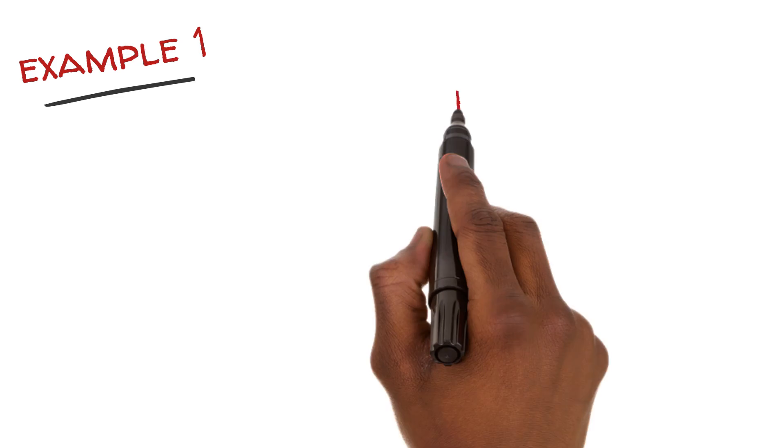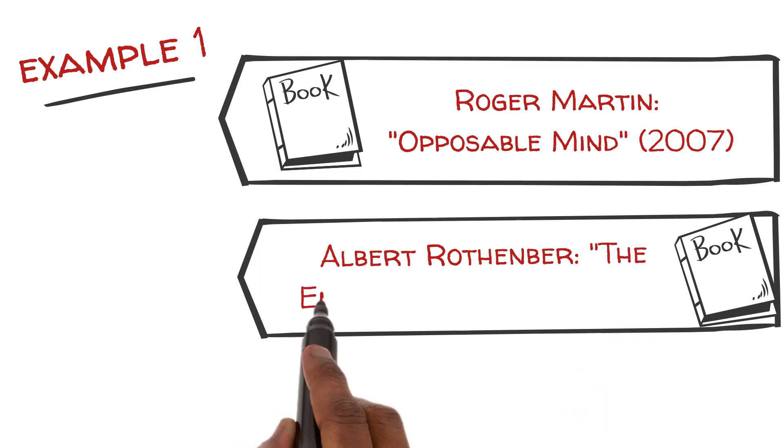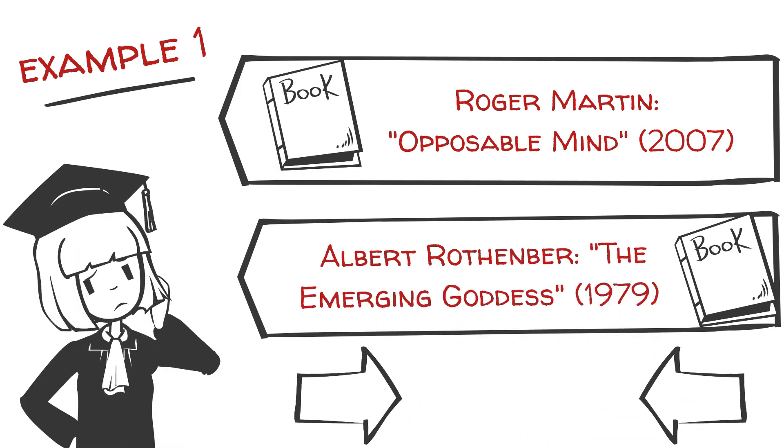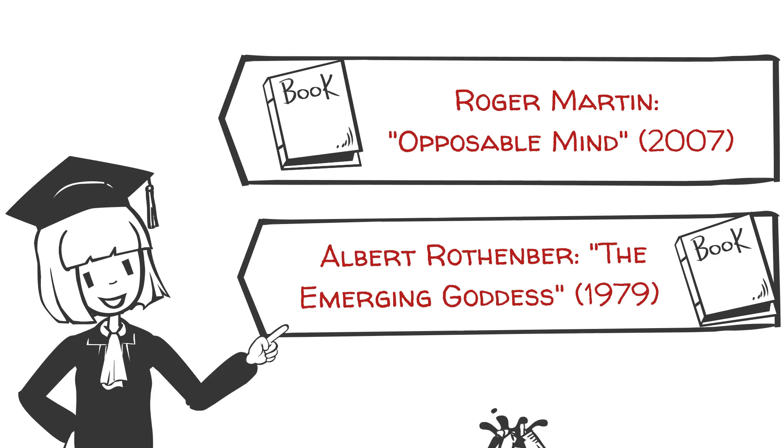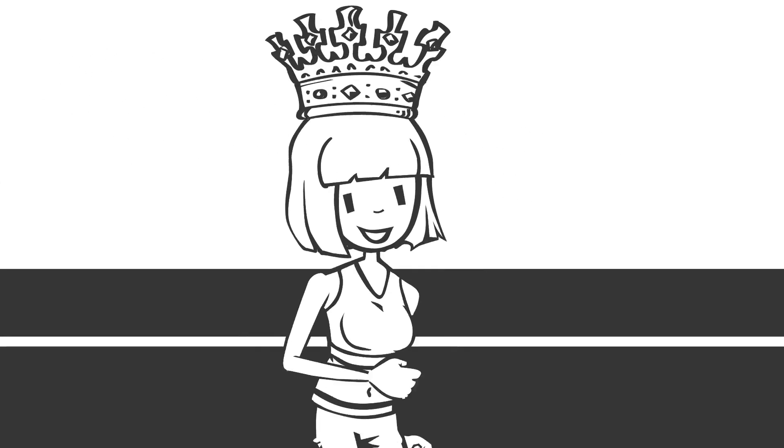Roger Martin's work on the opposable mind in 2007 and Albert Rothenberg's work on the emerging goddess in 1979 look at how highly creative people bring opposing ideas together to create something new and compelling. Elite athletes, for example, experience both high adrenaline and relaxation at the same time during peak performance.